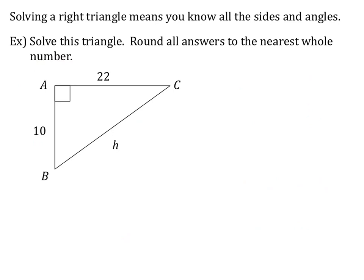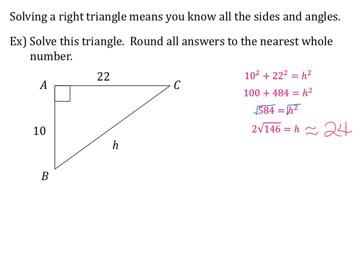Let's try a different example. We're going to solve this triangle and round all answers to the nearest whole number. I see that I have two sides, so right away I can use the Pythagorean theorem. 10 squared plus 22 squared equals h squared, since h is the hypotenuse. That gives 100 plus 484 equals h squared, so 584 equals h squared. Taking the square root, h equals the square root of 584, or simplified, two square roots of 146 — approximately 24.